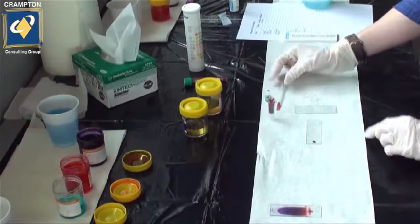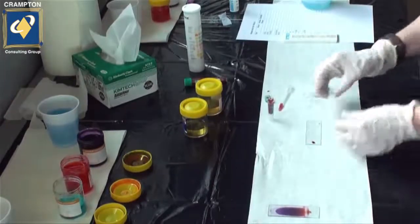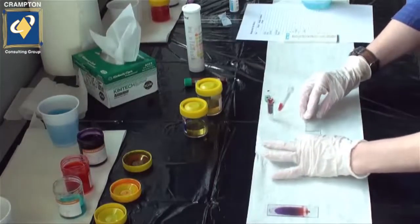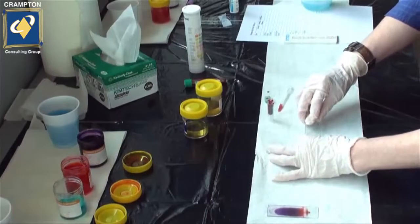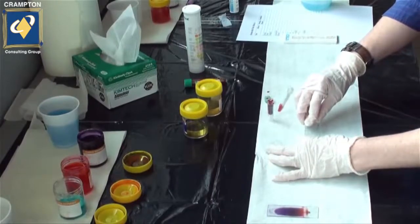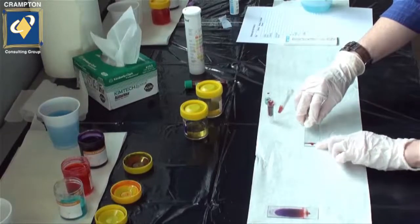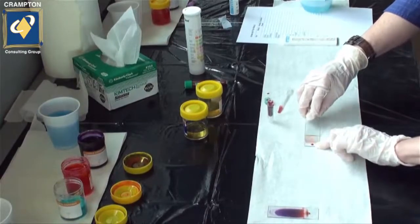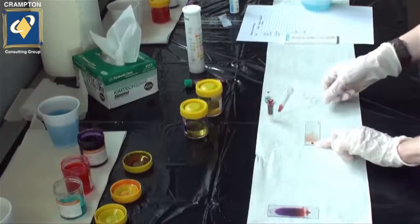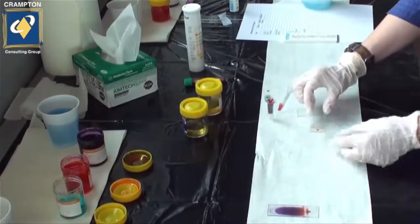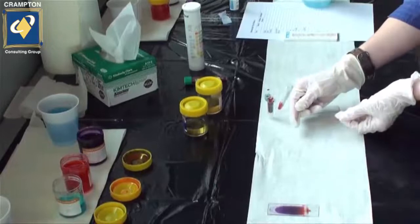We then use the spreader at a 45 degree angle to the drop of blood. We push the spreader up to the spot, allow a line to develop across the spreader, and then in a smooth motion, pull the spreader away from the line to perform the actual smear.